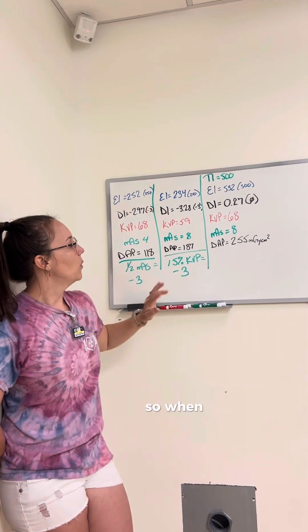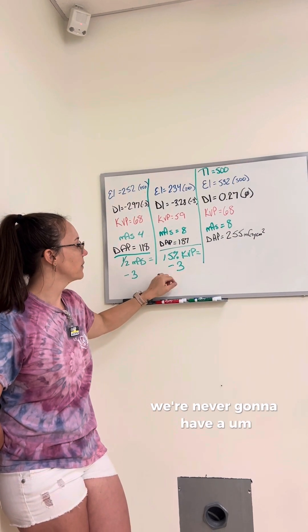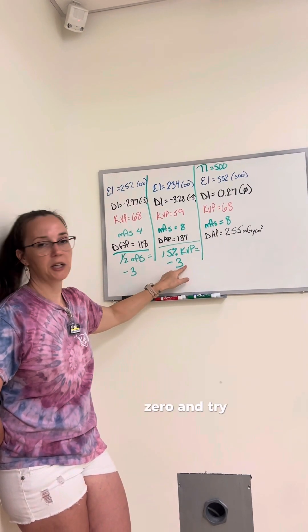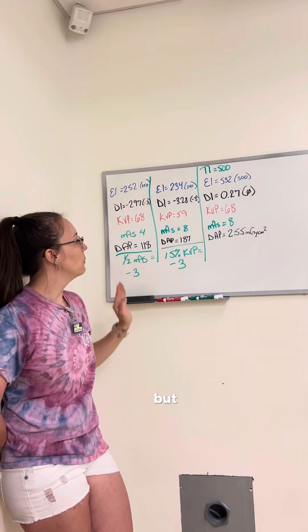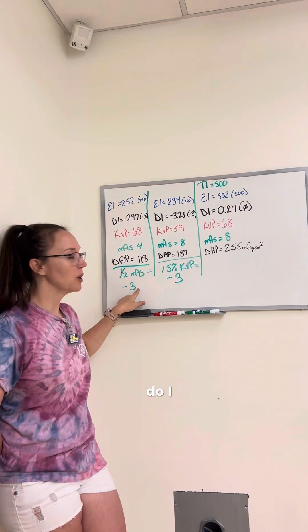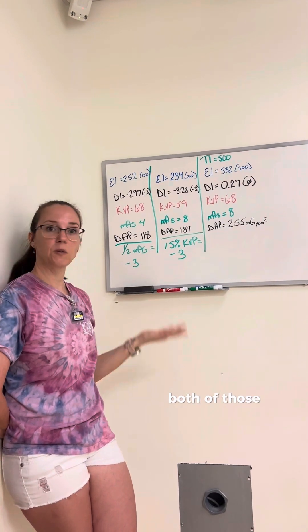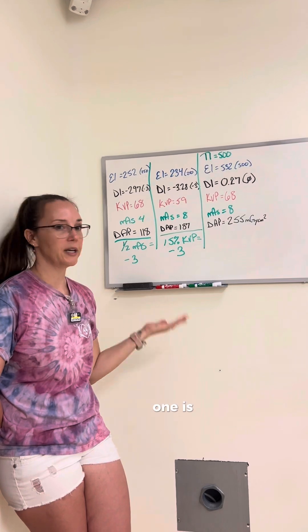So when do we ever use these scenarios? We're never going to have a 0 and try to shoot a negative 3. But we are going to have times when we shoot a negative 3. And if I shoot a negative 3, do I want to double my mass or do I want to bring KVP up 15%? Both of those options will get me to a 0. One is better than the other.